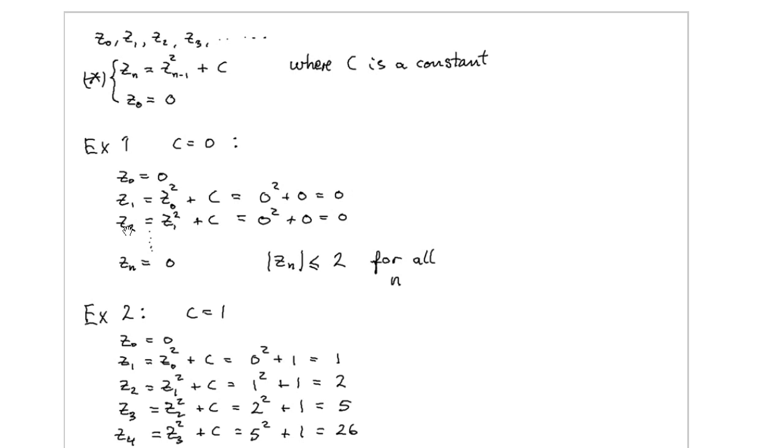And using the rule once more, the third element, z_2, is equal to the previous element squared plus C. We obtain that this is 0 squared plus 0 equal to 0.